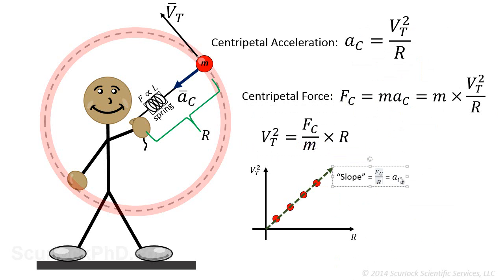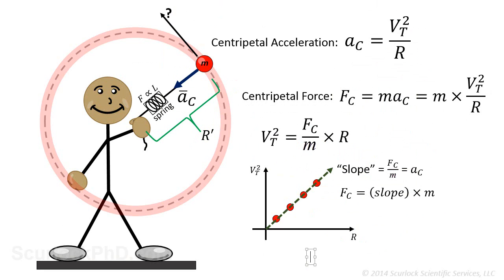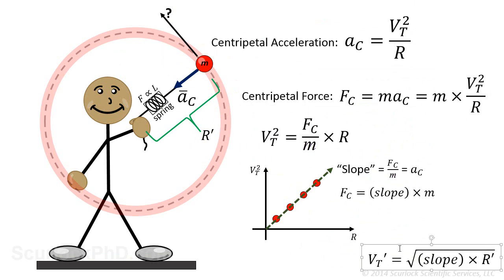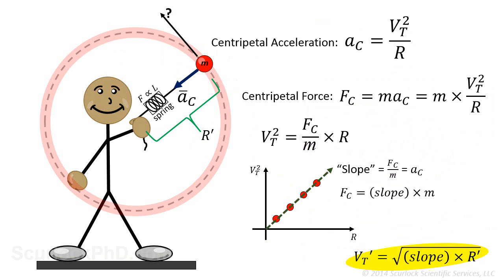Now, the physicist conducts another experiment, again carefully keeping the spring device at the same length as in the prior experiments, where the string has some length R'. Using the linear regression result, the physicist can make an estimate of the ball's velocity using the expression: the square root of the slope times R'.